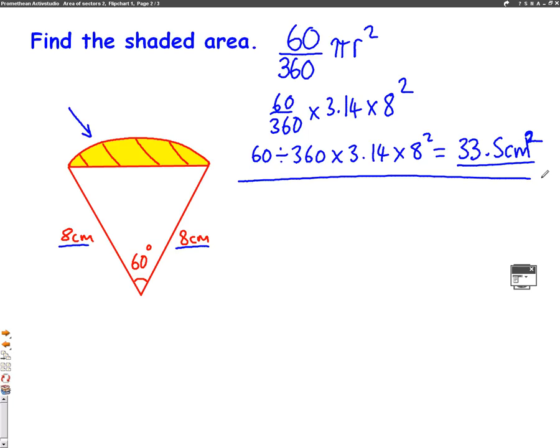Well, what we need to do now is we need to work out the area of the triangle inside the shape. Because if we can find this area, we can take it away from the whole sector. And we will be left with just the yellow bit at the top.